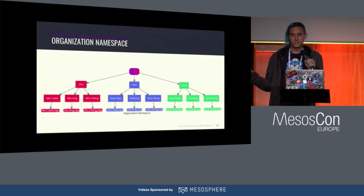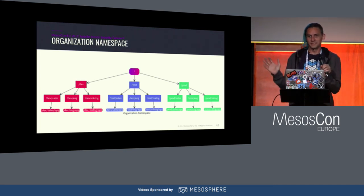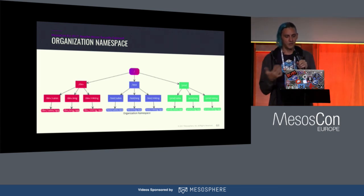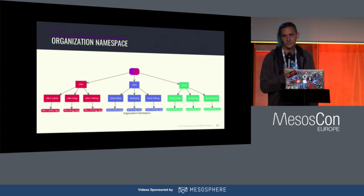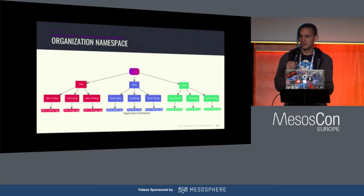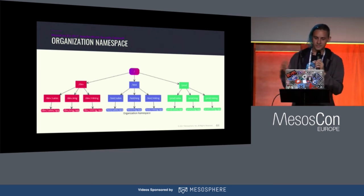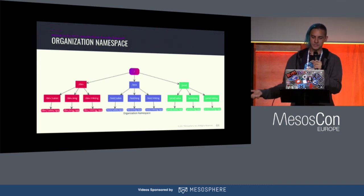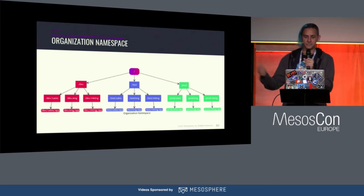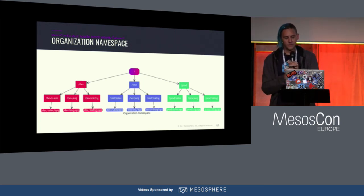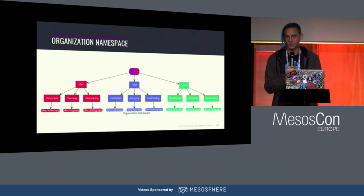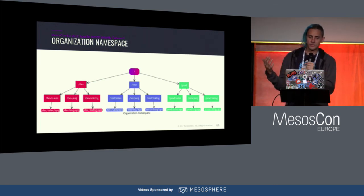If you're a single user of a Mesos cluster you have no problem seeing everything. But if you're a 100,000-person organization spread across different departments, teams, and projects, you may have legal requirements — your home mortgage department can't access your stock investment department, sales shouldn't see what engineering is working on. You often end up with a hierarchical organization split between different environments, departments, teams, and projects, and you'll want to partition your resources and tasks in a corresponding manner.